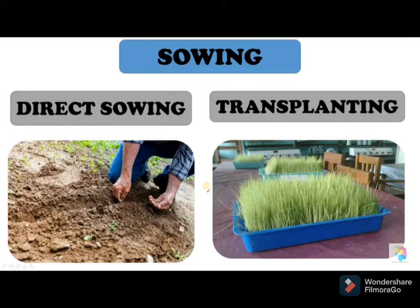In transplanting, seeds of a few plants such as paddy are first grown in a nursery. When they grow into seedlings, they are transplanted to the field manually. Some forest plants and flowering plants are also grown in a nursery this way.